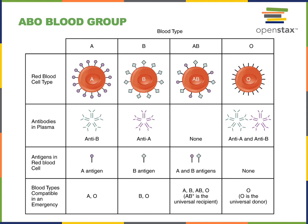A person with type B blood has the B antigens on the surface of their erythrocytes, and they produce antibodies that can bind to the A antigen, so they would have a transfusion reaction if we give them type A blood or type AB blood.